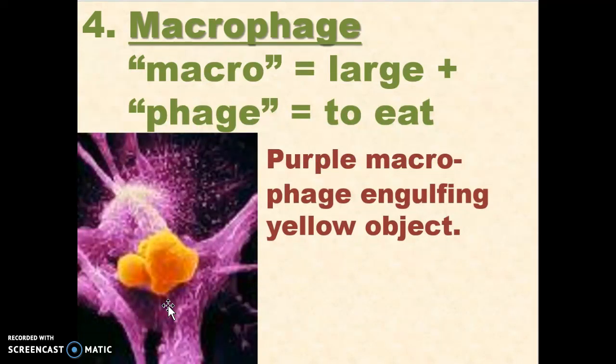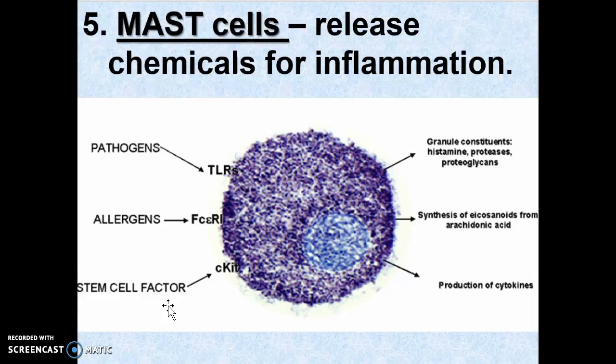A macrophage is a white blood cell, which literally means large eater — macro means large, phage from the Greek phageo, to eat. They've done this electron micrograph and color-enhanced it to make the white blood cell look purple and the bacteria look yellow. Mast cells are another type of cell, and they release chemicals for inflammation — your histamines.